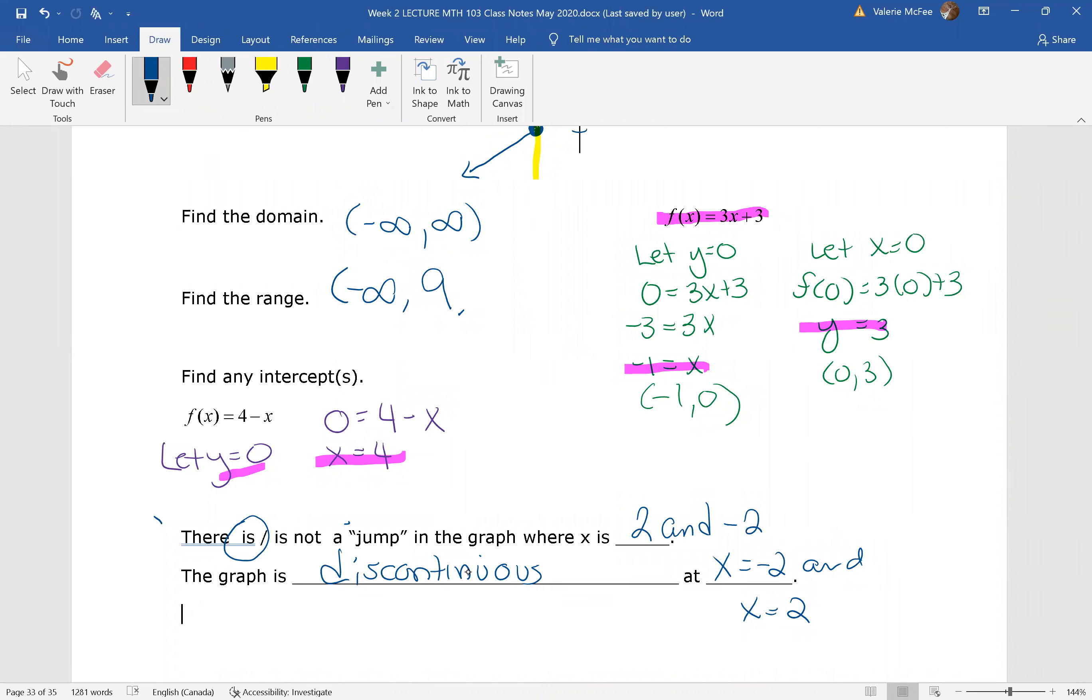This graph is discontinuous. You have to lift your pencil where x equals negative two and x equals positive two. These were the first of the difficult graphing questions we're going to do in Math 103. Spend enough time reviewing these lessons and practicing before we get to the next set.